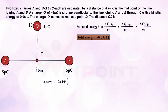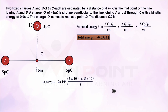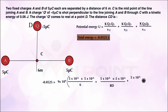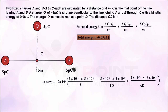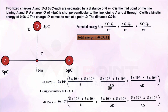We find the potential energy at D: U = 9×10⁹ × [ (5×10⁻⁶ × 5×10⁻⁶) / 6 + (5×10⁻⁶ × (−5×10⁻⁶)) / BD + (5×10⁻⁶ × (−5×10⁻⁶)) / AD ]. By symmetry, the distance AD equals BD, so we replace BD with AD throughout. Setting this equal to minus 0.0525 joule and solving, we get AD equal to 5 meters.